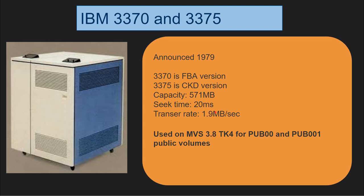Then IBM released the 3370 and 3375, which we also use on TK4. The 3370 was a smaller cabinet version with better electronics. There was an FBA version and the 3375 for the count-key-data version. Capacity was increased to 571 megabytes and transfer rate improved to 1.9 megabytes per second. We use these for the public volumes on TK4 — Pub000, Pub001.